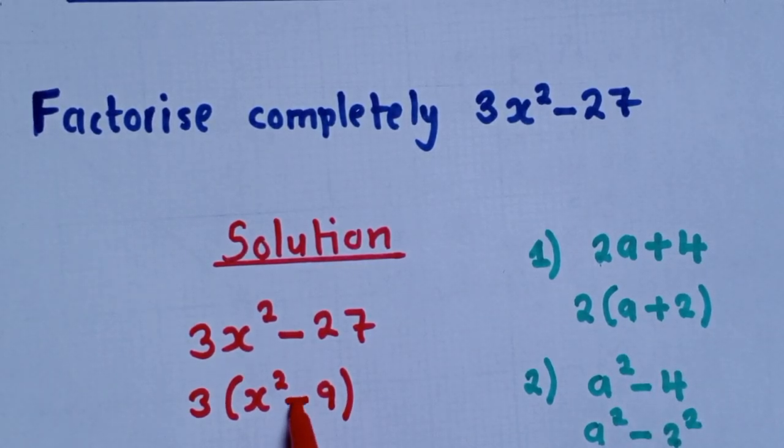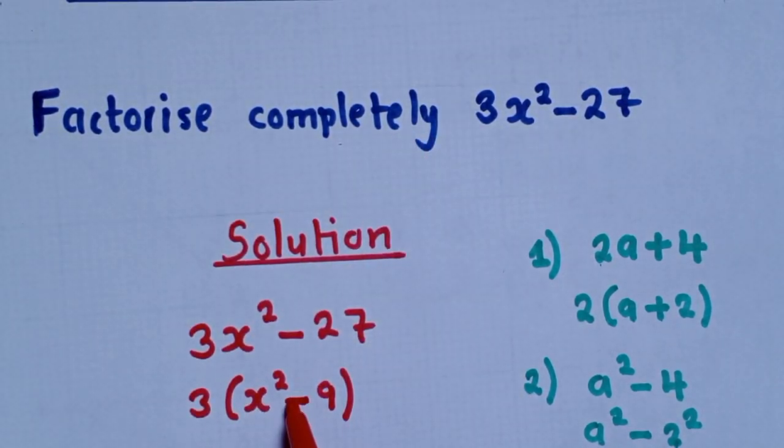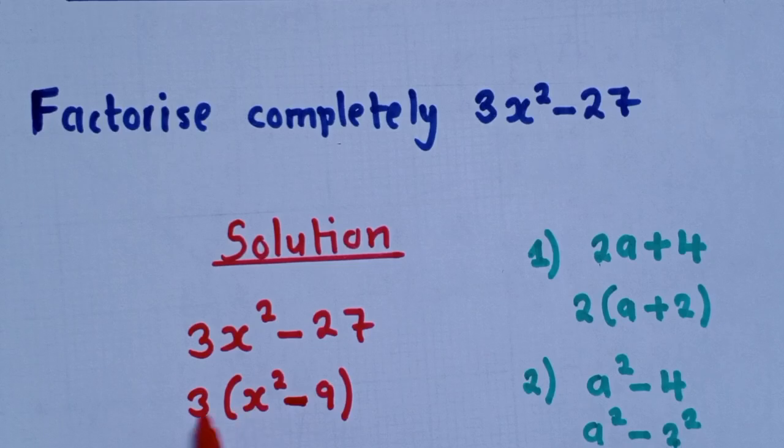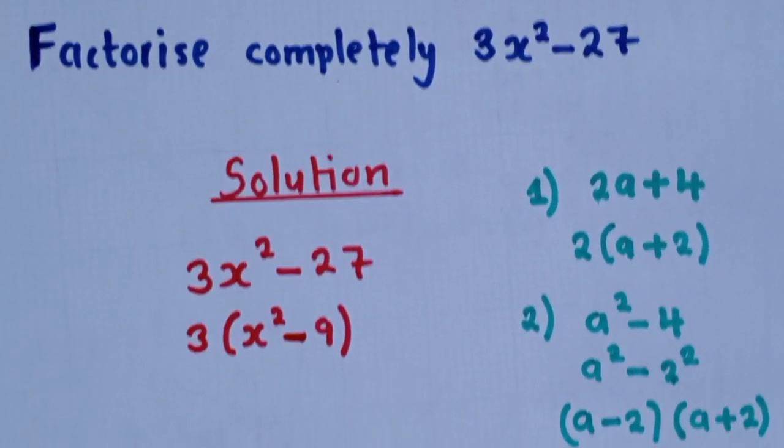If we had a plus sign here, we would have ended. Because the question says, factorize completely. And if you're able to see there is a minus sign, we can't stop here. We need to factorize it further. If it was a plus sign, we would have ended here. But now, it's a minus sign. So what do we do next?